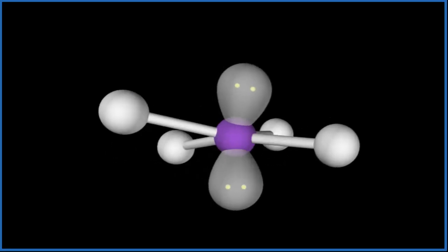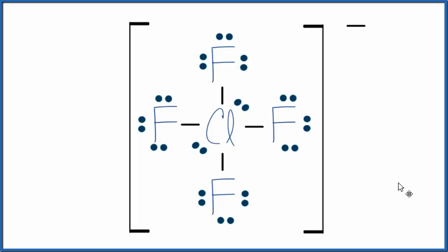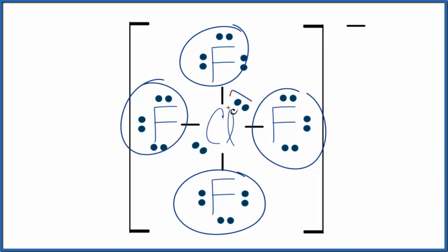Let's go back to our Lewis structure. If we weren't able to visualize that square planar molecular geometry we could do two other things. One is we could look at the steric number and the total number of things bonded to the central chlorine. So we have one, two, three, four fluorines, five, six.